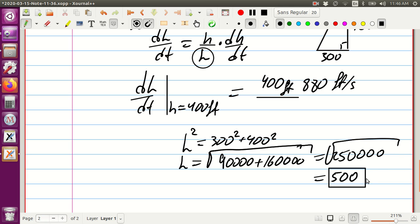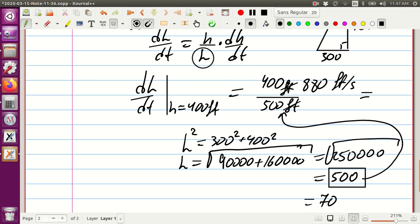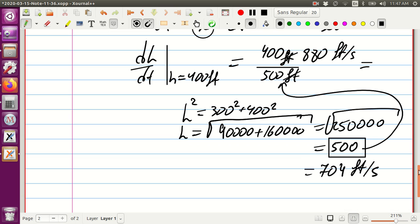So we take 500 and we put it over here, 500 feet. So feet and feet we can divide by, and then we will calculate this quantity. We need to take a calculator and calculate 4 times 880 divided by 5, so we're going to get 704 feet per second. So this concludes this exercise and we'll do a few more examples in the next lecture.